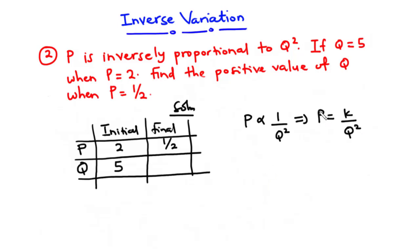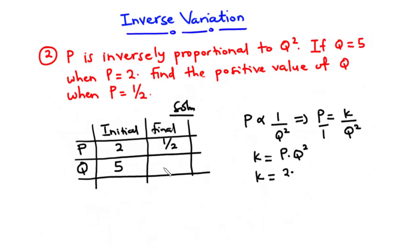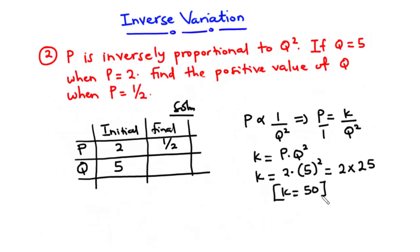We know the initial values of p and q, so we can find the constant k. Rearranging gives k equals p times q squared. Substituting: k equals 2 times 5 squared. Since 5 squared is 25, we get k equals 2 times 25, which is equal to 50. So the constant k is equal to 50.